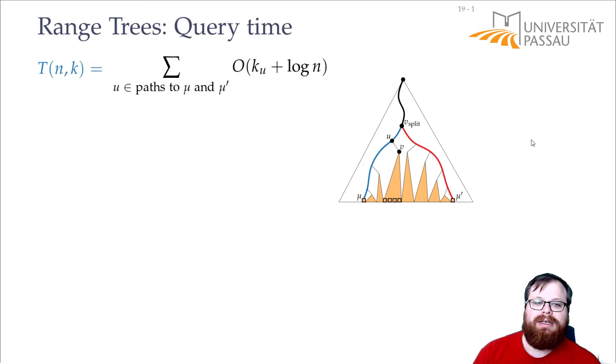What about the querying? In the querying, we do the same thing as we had in one-dimensions. We look in the first level tree for the v-split, find these canonical subsets, but then instead of reporting, we do another one-dimensional query.